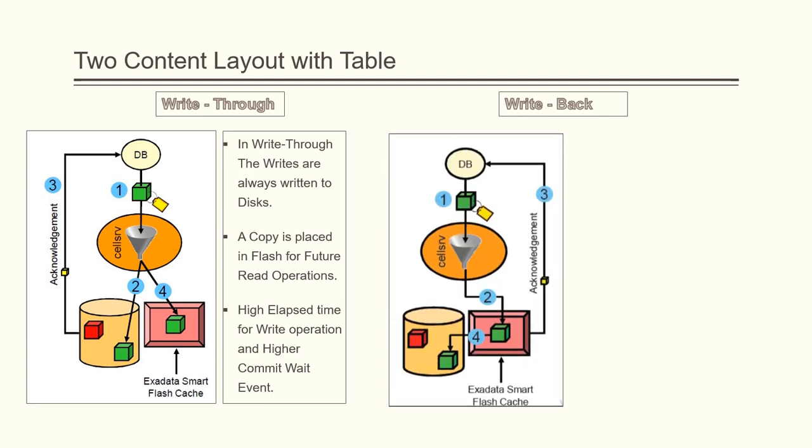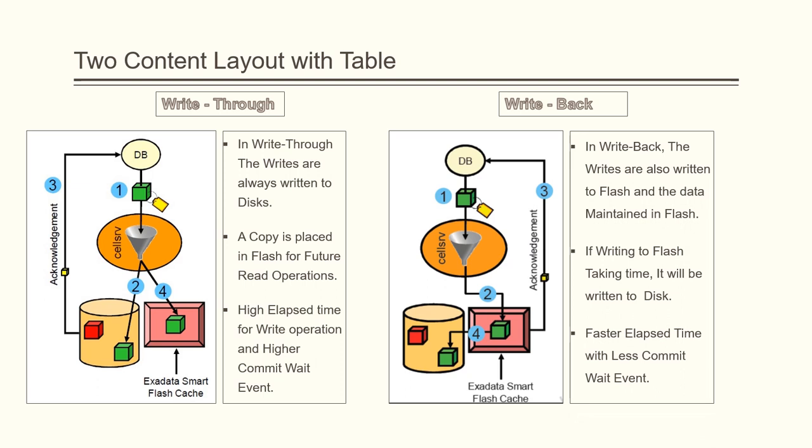In Write Back mode, the changed data block is sent to both the physical disk and the flash. Whichever gives the acknowledgement first is taken into consideration as far as the database is concerned, and the data is later flushed to disk as needed. Since write operations return from the flash disk, disk latency is reduced and the elapsed time and high commit wait events are reduced. From 2017, Oracle makes Write Back the default flash cache mode.